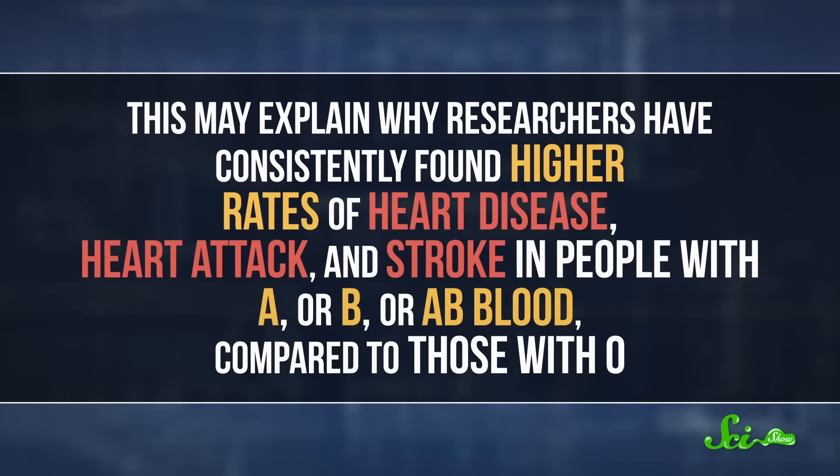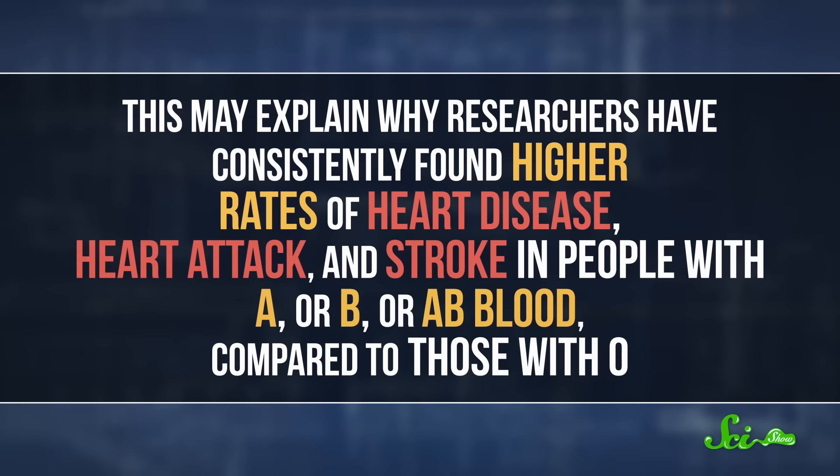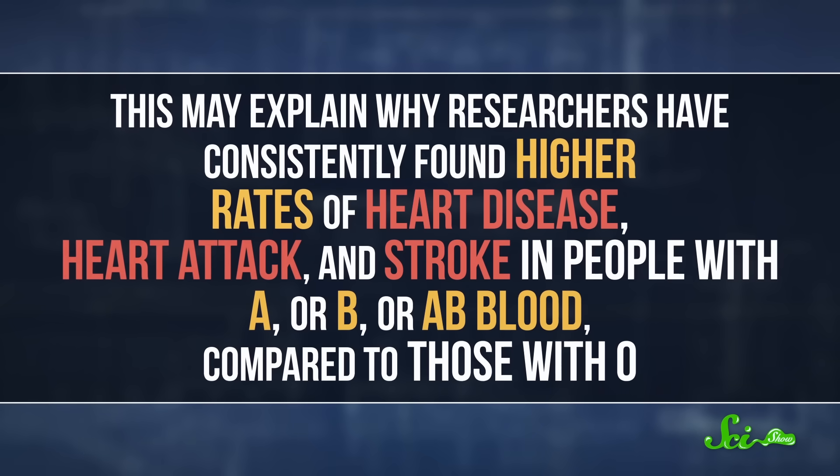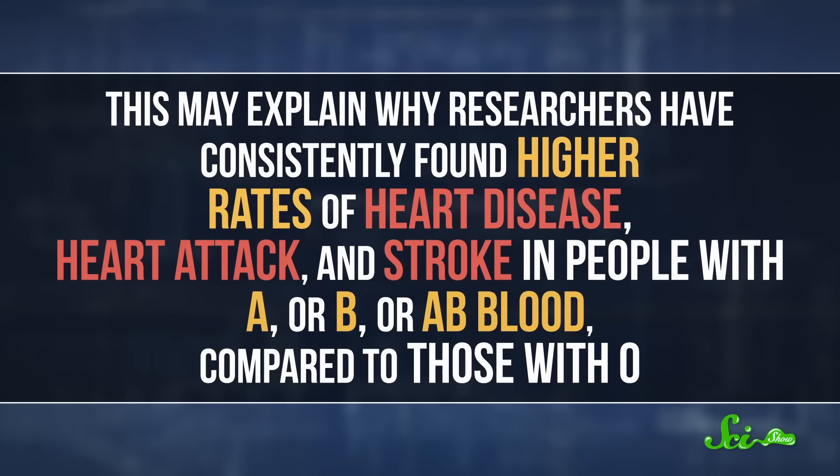As a result, people with type A, B, or AB blood have about 25% more of this clotting factor in their blood. This may explain why researchers have consistently found higher rates of heart disease, heart attack, and stroke in people with A or B or AB blood compared to those with O.